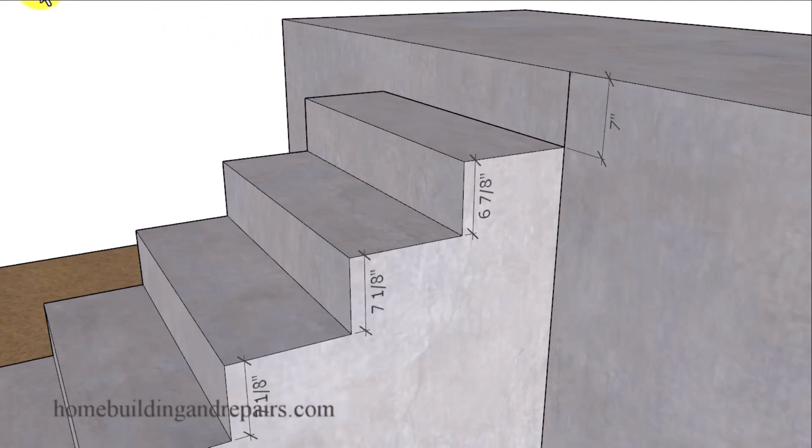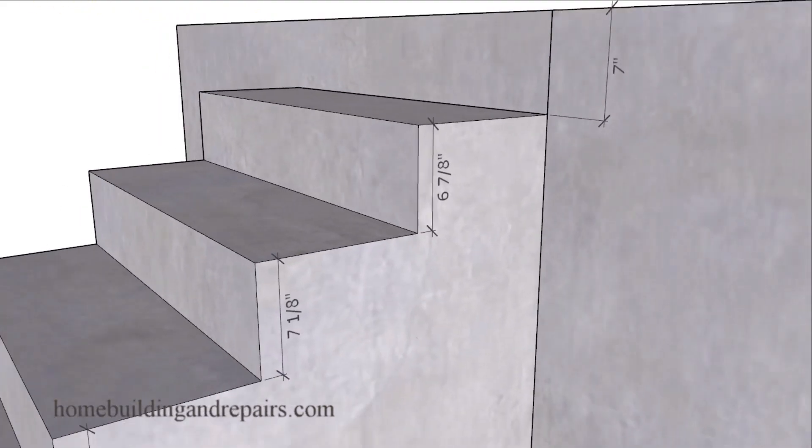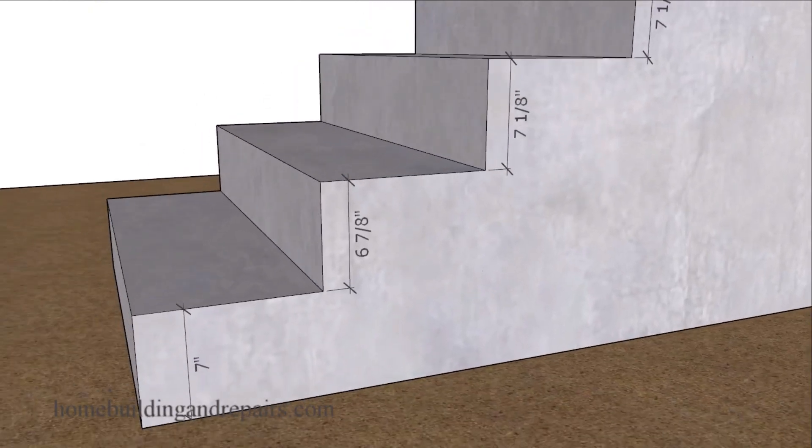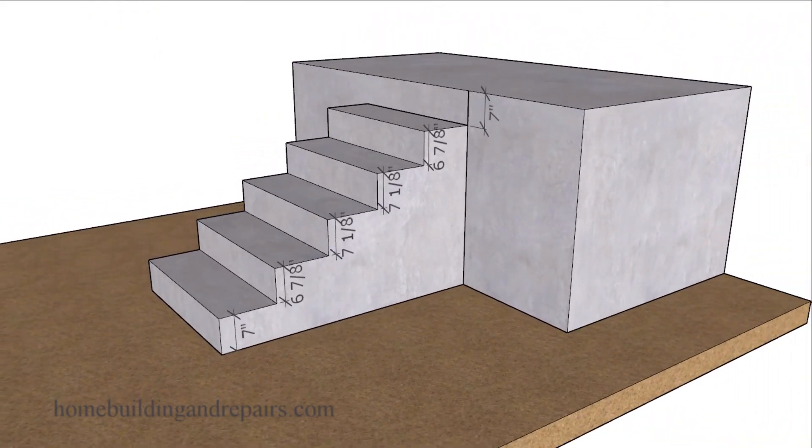So again, here are a few different riser heights that in reality are only off about an eighth of an inch. For example, if we raised this step up an eighth of an inch, we would have a seven inch, seven inch, and seven inch riser height. So to create this stairway, I simply lowered one step an eighth of an inch and raised one step an eighth of an inch.